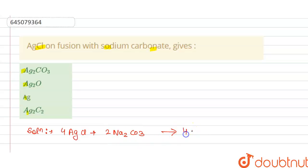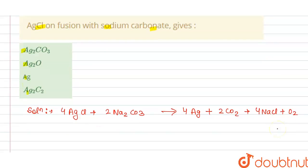So this will give us 4 times Ag, 2 times CO₂, and 4 times NaCl and O₂. So from this we can say that AgCl on fusion with sodium carbonate.